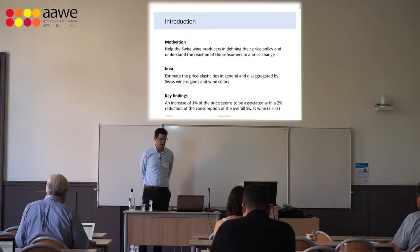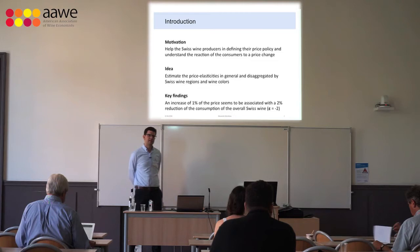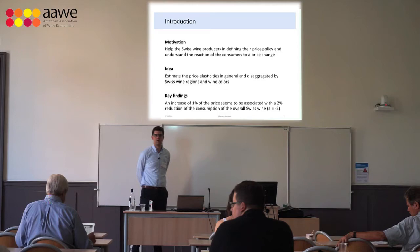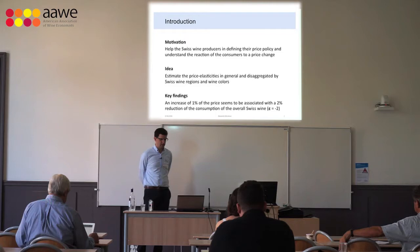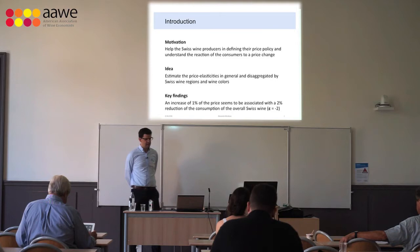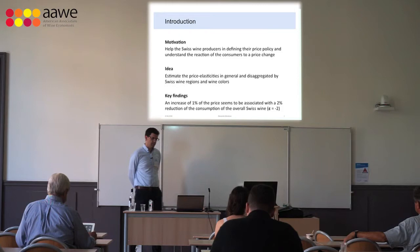The idea of the paper is to estimate the price elasticity overall for all Swiss wine, and then disaggregate it by Swiss wine region and colors — red, white, and rosé. The key finding is that an increase of 1% in prices for the overall Swiss wine seems to be associated with a 2% reduction in consumption, so a price elasticity of about minus 2.